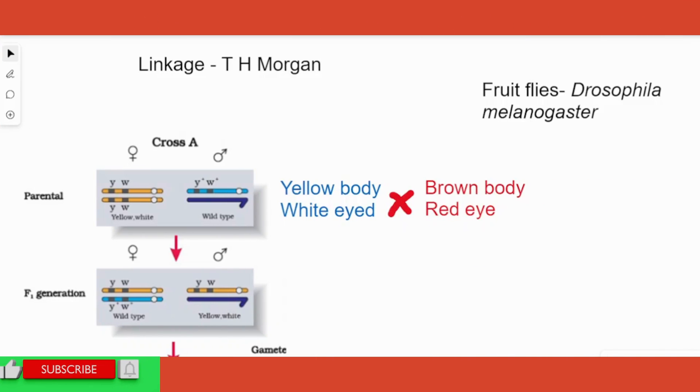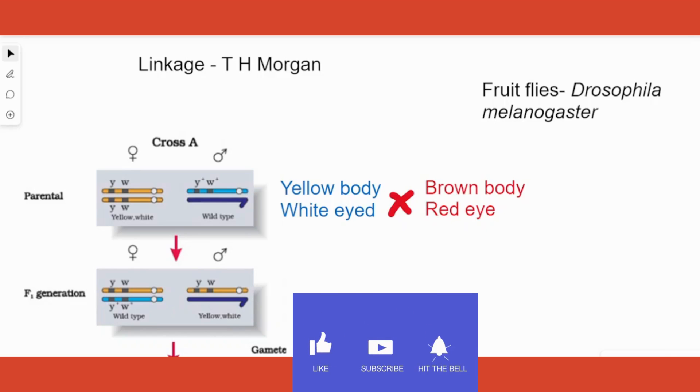Hello students, welcome back to Grade 12 Biology Genetics chapter playlist. We have been learning about basics of genetics, Mendelian laws, co-dominance, incomplete dominance, sex determination in different organisms, and so on in the previous videos. Links for all those videos are in the description below. Before we go to today's topic, if you find my videos useful, please subscribe to the channel, like the videos, and share with your friends so they can learn along.